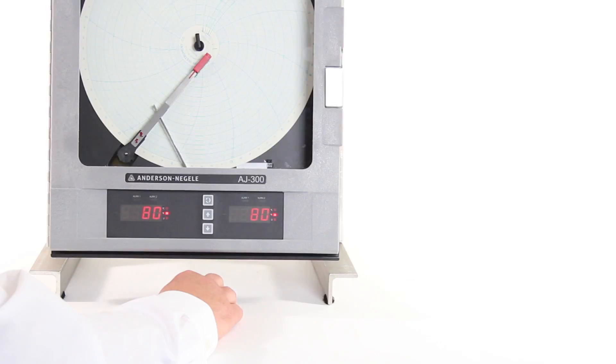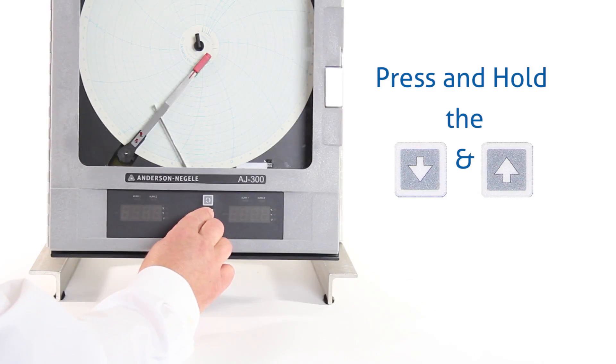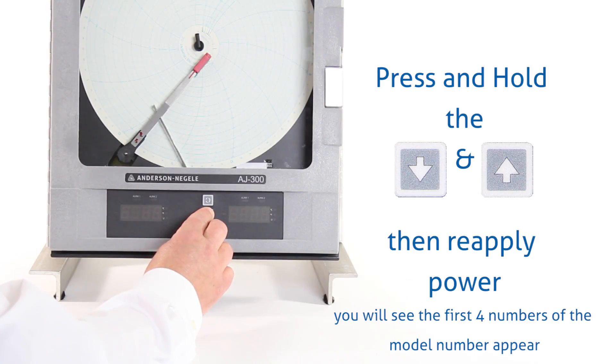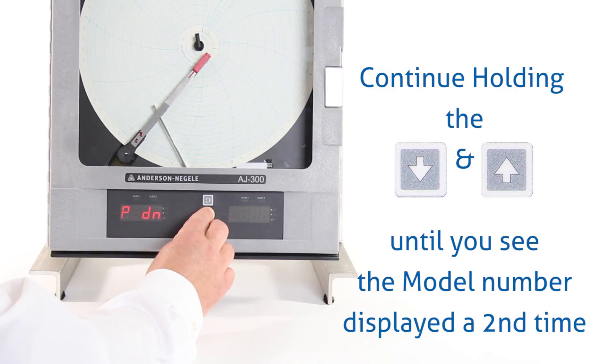The first step of the system reset involves powering down the recorder. Once the power's off, you're going to press and hold the up and down arrow keys. While you're holding the keys, you're going to reapply power. Once the power comes on, you're going to see the model number of the recorder appear on the left-hand display, but it's important that you continue to hold the keys long enough to see that model number come up a second time.